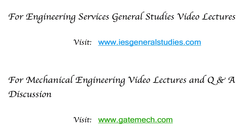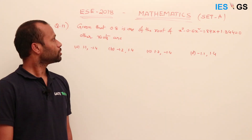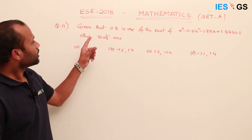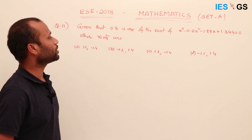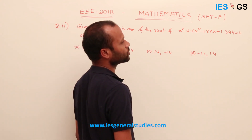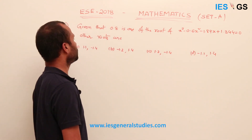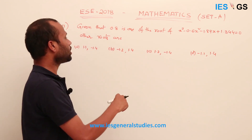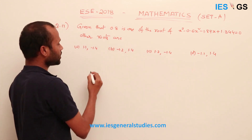For engineering services general studies video lectures, visit www.isgeneralstudies.com. For mechanical engineering video lectures and question and answers discussion, visit www.katemeck.com. Question number 11: given that point 0.8 is one of the roots of the equation x³ minus 0.6x² minus 1.84x plus 1.344 equals 0, find the other roots.